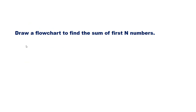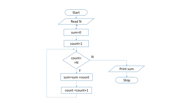Draw a flowchart to find the sum of first N numbers. Start. Read N. Set sum equal to 0, count equal to 1. We will be adding 1 plus 2 plus 3 and so on up to N. While count is less than or equal to N: sum equal to sum plus count, count equal to count plus 1. This is a loop. Print sum and stop.